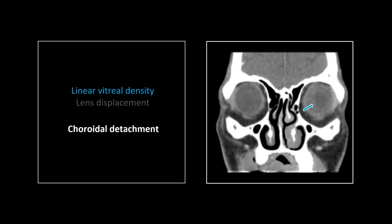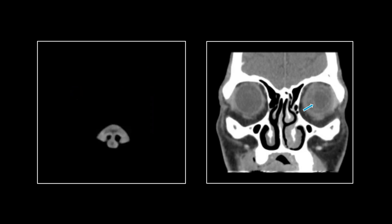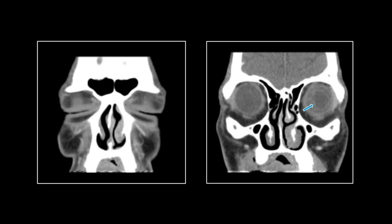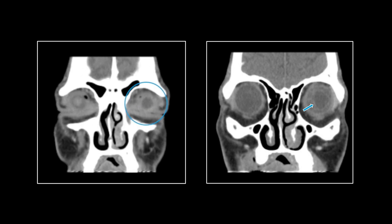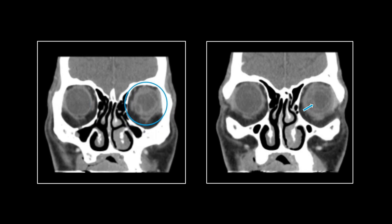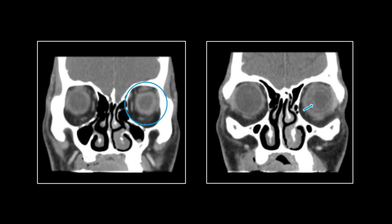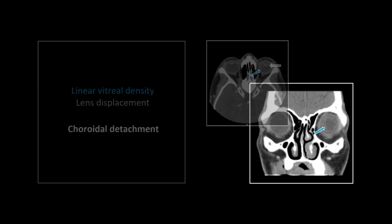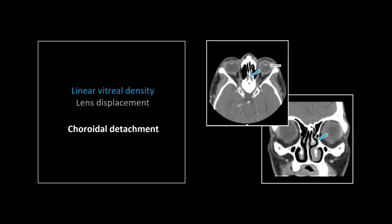Here it is on the coronal — a really nice view. You can see it's separated from the inside of the globe all throughout. So that is a choroidal detachment.